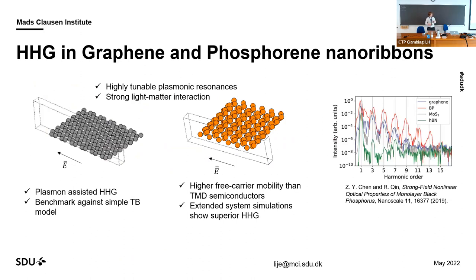We looked at graphene and phosphorene nanoribbons. Both have nicely tunable plasmonic resonances — when you either chemically or electrostatically dope them, you can really change the position of your plasmonic resonance, and they also have strong light-matter interaction. In the case of graphene, we have known plasmon-assisted high harmonic generation, and it's also a nice benchmarking system because you can look at this very simple tight-binding model with nearest-neighbor hopping. Phosphorene is very nice because it's a semiconductor with high carrier mobility, and simulations on extended systems have shown it has potential to actually outperform graphene when it comes to high harmonic generation.